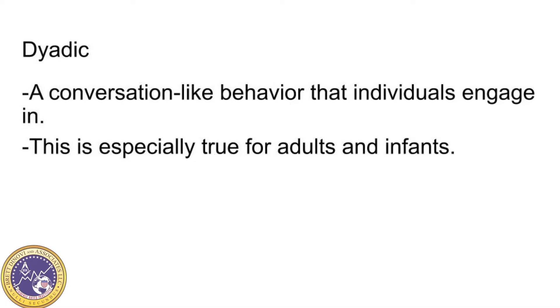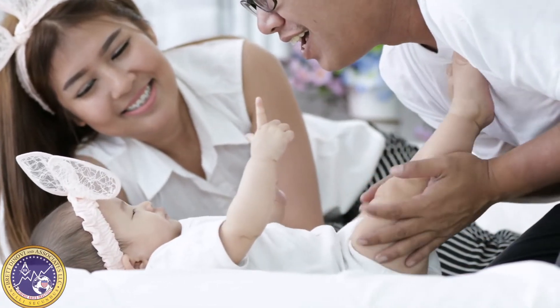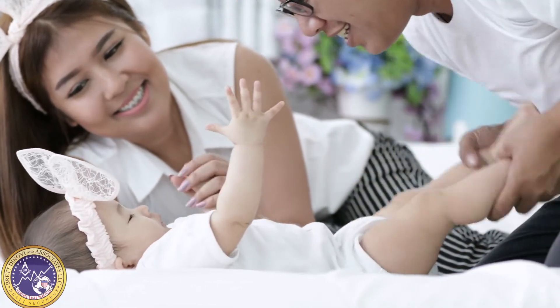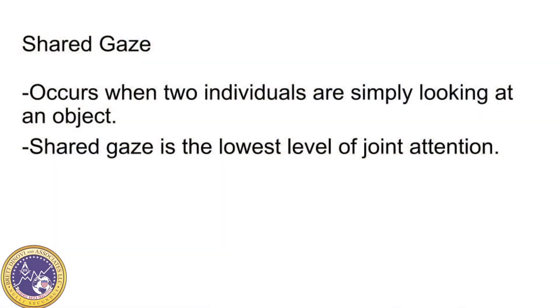Dyadic is a conversation-like behavior that individuals engage in. This is especially true for adults and infants. Infants engage in this behavior starting at around two months of age. Adults and infants take turns exchanging facial expressions, noises, and in the case of the adult, speech. Shared gaze occurs when two individuals are simply looking at the same object. Shared gaze is the lowest level of joint attention.